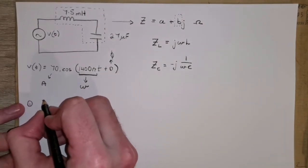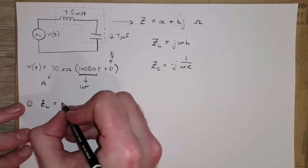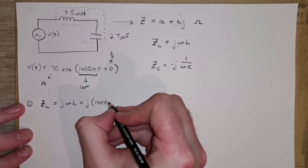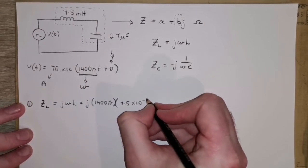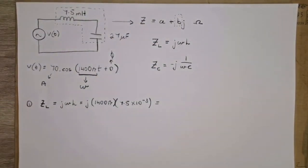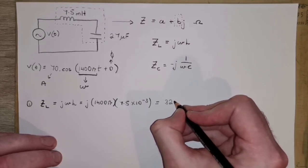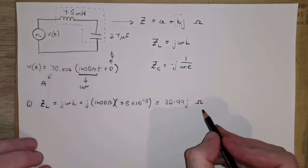First, let's get ZL, the impedance of the inductor. So it's j times omega L, that's j multiplied by 1400 pi, multiplied by 7.5 by 10 to the minus 3, because it's millihenry. So let's put that into the calculator. And that comes out as 32.99j ohms, since this is an impedance.